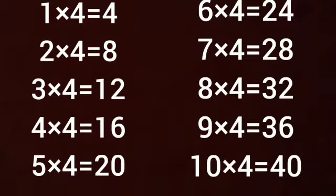1×4 is 4, 2×4s are 8, 3×4s are 12, 4×4s are 16, 5×4s are 20, 6×4s are 24, 7×4s are 28, 8×4s are 32, 9×4s are 36, 10×4s are 40.